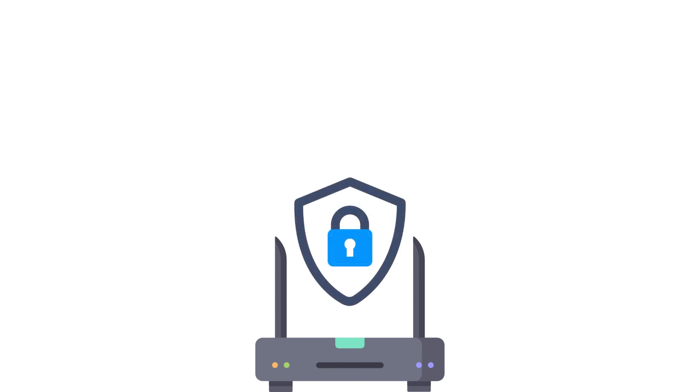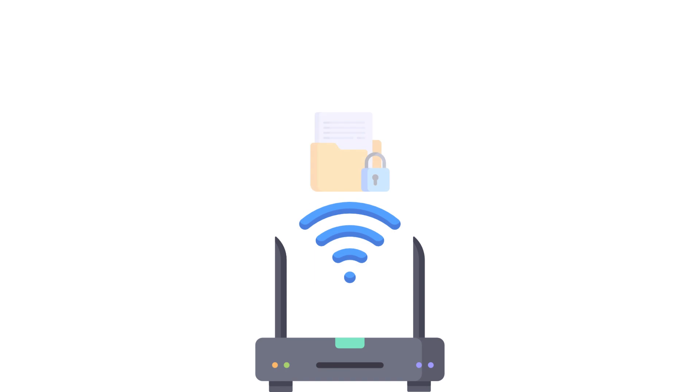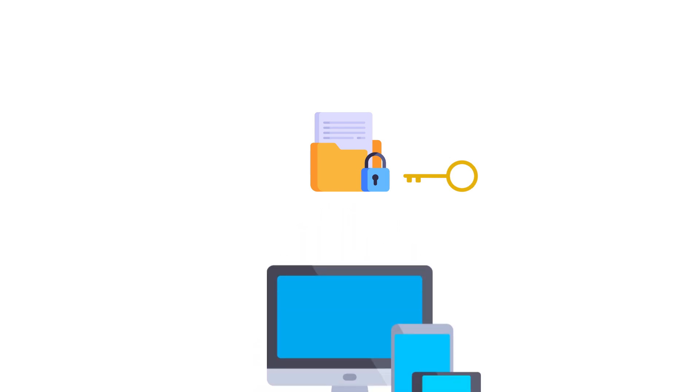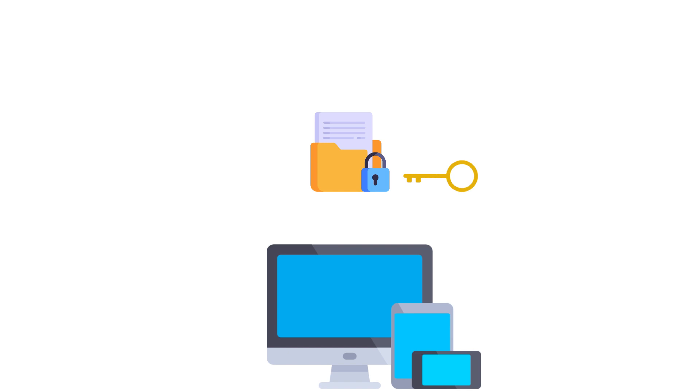In the encryption process, the router adorns each outgoing packet with a cloak of encryption — a digital veil that conceals the contents within. This cryptographic transformation, executed through the RC4 encryption algorithm, safeguards sensitive information from potential eavesdroppers. As these encrypted packets travel through the airwaves, they carry a secret that only the designated client can unveil. With the shared decryption key, the client catches each packet and performs a reverse decryption, revealing the original data.